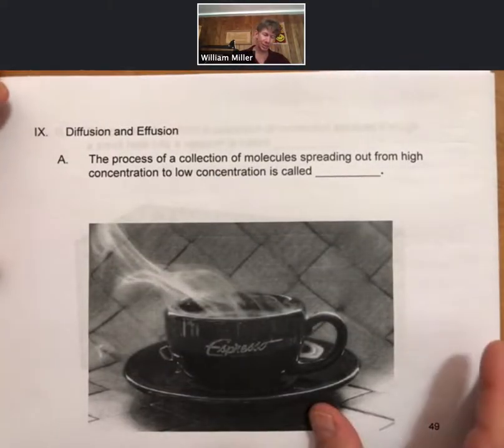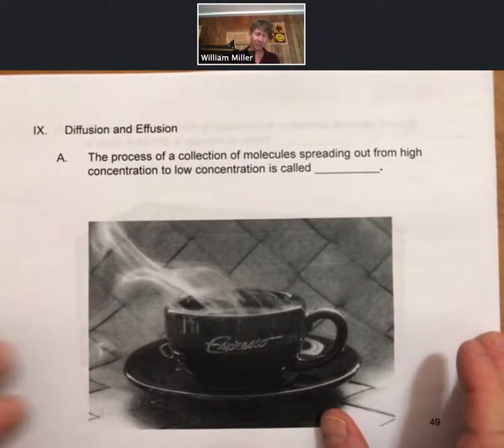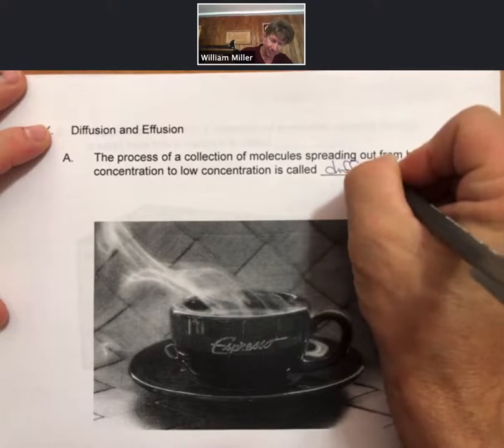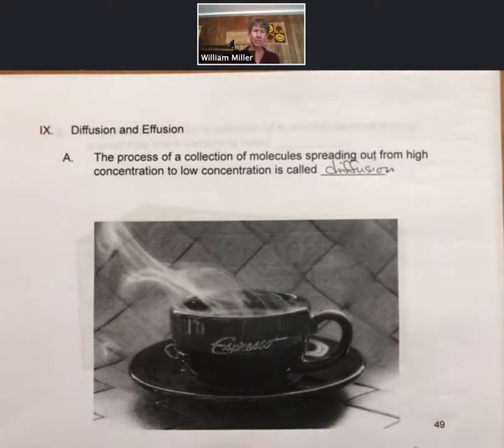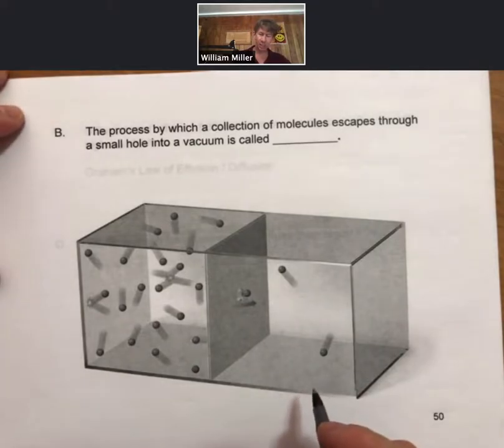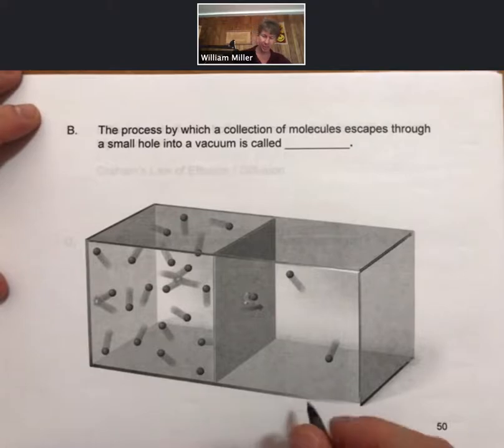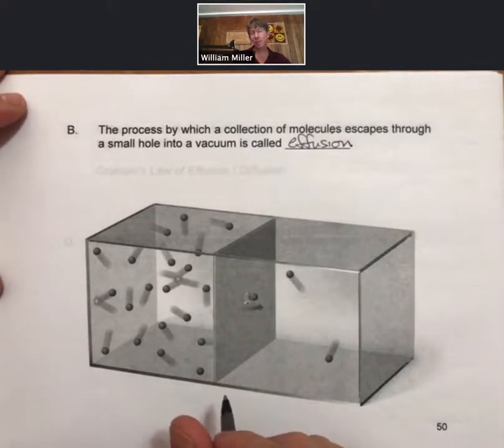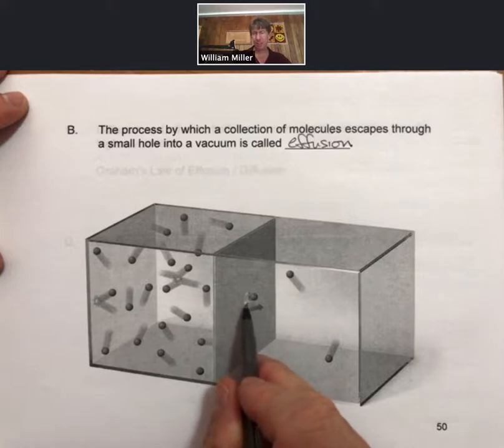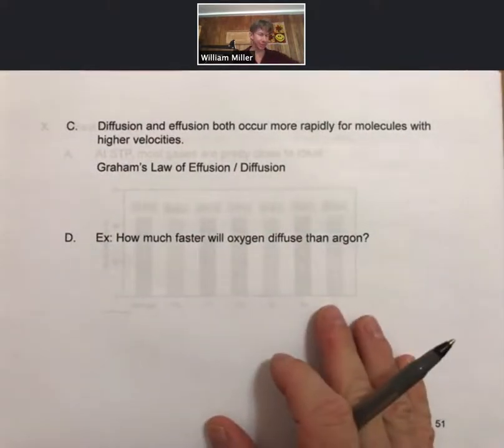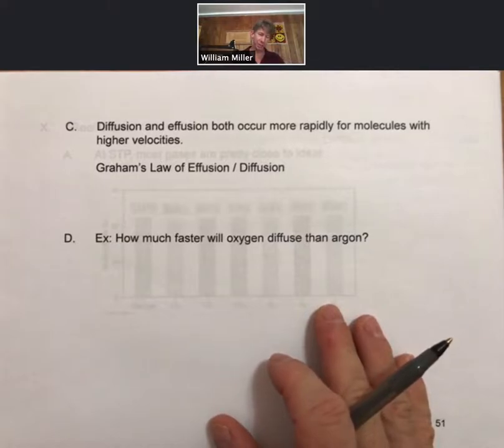Well, now let's talk about diffusion and effusion. So the process of a collection of molecules spreading out from high concentration to low concentration is called diffusion. And really diffusion and effusion are very related, as we will see, even though they are different processes. The process by which a collection of molecules escapes through a small hole into a vacuum is called effusion. In both of these cases, the faster the molecules are moving, the faster the rate of diffusion or effusion. This one is just a little easier to do in the lab and control, and therefore that's how things were measured. So diffusion and effusion both occur more rapidly for molecules with higher velocities.